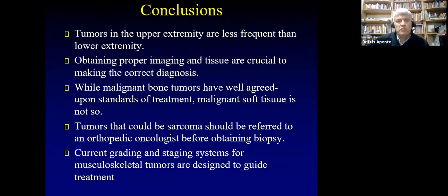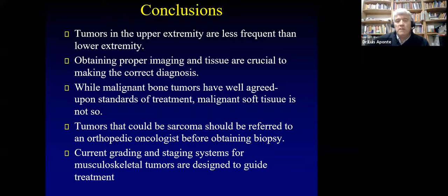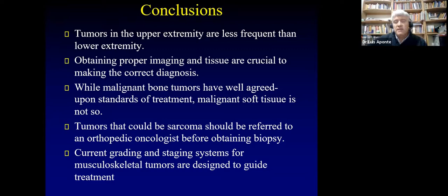In summary, tumors of the upper extremity are less frequent. We need proper imaging — starting with a good X-ray, not just CT or MRI alone; X-ray gives a lot of information. It is crucial to suspect the diagnosis. Bone malignant tumors have well-agreed-upon standard treatments, but malignant soft tissue sarcomas do not — we only know we have to take it out. The standard treatments for soft tissue are less clear, and if you suspect a sarcoma, you must refer to an orthopedic oncologist.